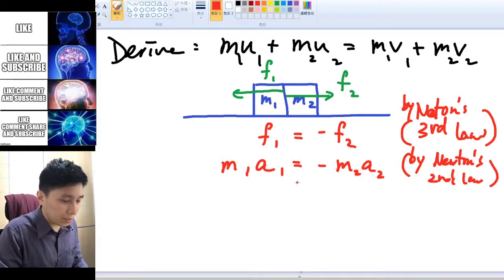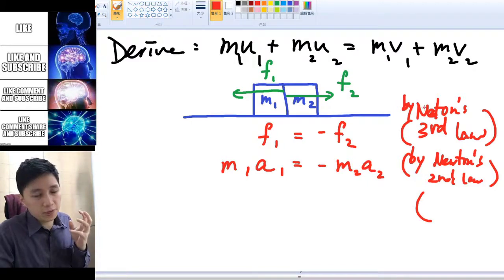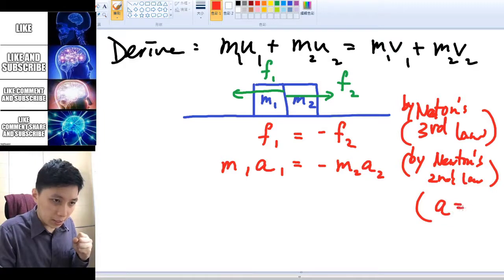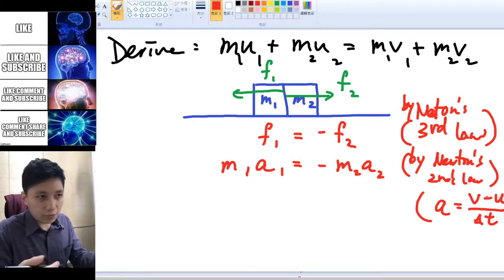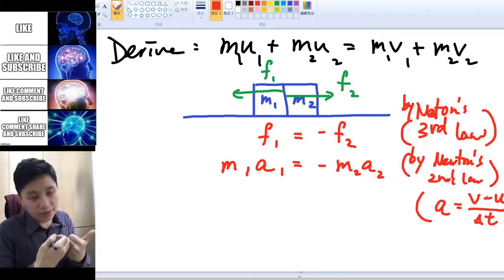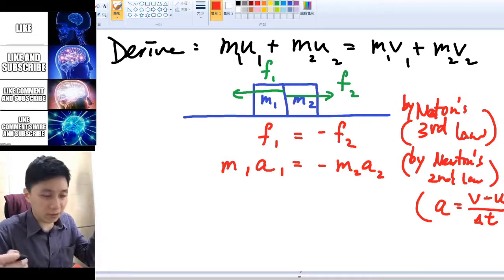Alright, next up then you have to recall the definition of acceleration that we have learned earlier, and that's a equals to v minus u over t. The t is like the change of time, right? In our case, it will be the impact time, how much time they are in contact. Of course, it will be very short, it's very instantaneous, but there's still a finite time, right? Maybe 0.001 second, I don't know.